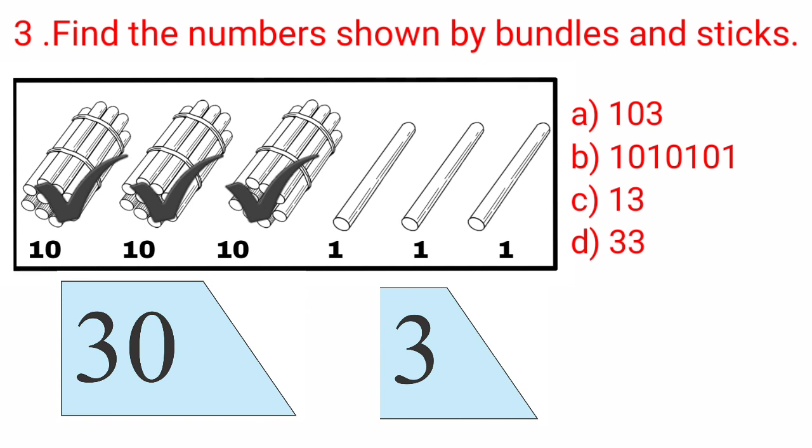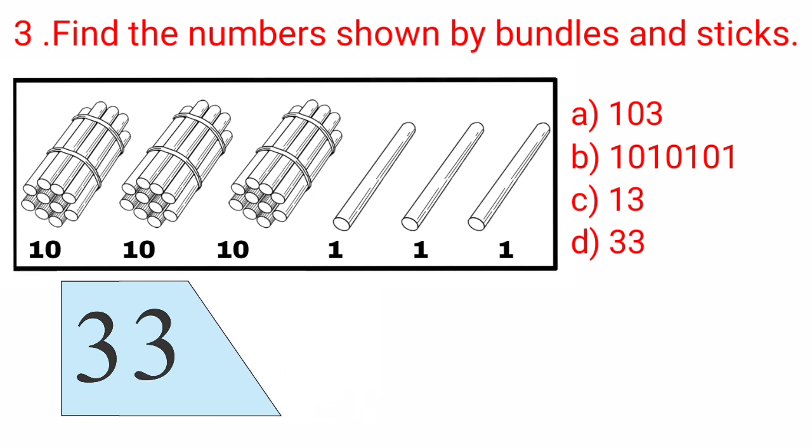And now the number is 30 and 3: 33. Let's check the options. Option A is not 33, so it is not correct. Option B is also not correct. Option C is 13. It is also not correct. And option D is the same number 33. And we put a tick mark at option D.